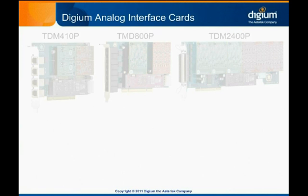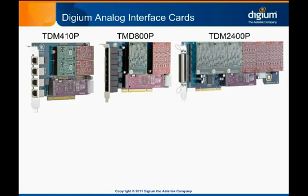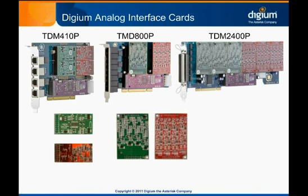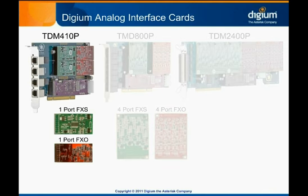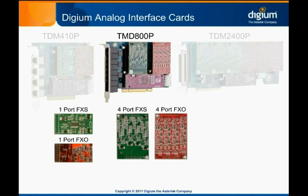Digium offers analog interface cards in port densities of 4 to 24 ports. The base cards offered support 4, 8, and 24 ports. Each card accepts both FXO and FXS Dottie modules, which may be arranged in the specific configuration required for your system. These Dottie modules come in 1 and 4 port variations. The 4 port card supports only the single port modules, and the 24 port card supports only the 4 port modules. The 8 port card supports both module sizes.